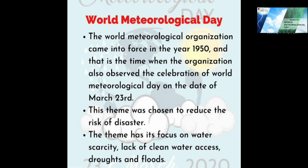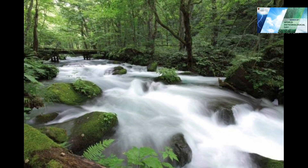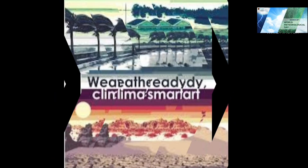The world is 70 percent water, and the ocean is key to understanding our weather and climate. The ocean controls the Earth's climate by modulating the global hydrological cycle, as well as through its heat storage capacity and redistributing this heat. Its currents are crucial for regulating temperature, precipitation, and humidity.